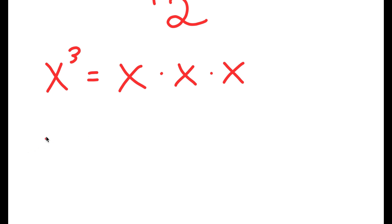Now, if I have something in the form x tetration three, this is equal to x to the power of x to the power of x.